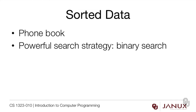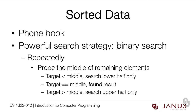In computer science, when things are sorted we can use a very powerful search strategy called binary search. Here's how it works: you repeatedly probe the middle of the remaining elements. If the target value you're looking for is smaller than the middle element, you search only the lower half. If the target is equal to the middle element, then you found your result and you're done. If the target is bigger than the middle element, then you search only the upper half. This is an unbelievably powerful strategy.